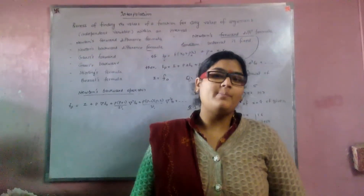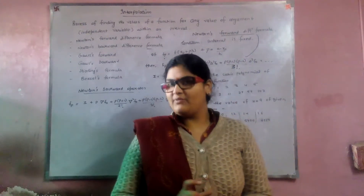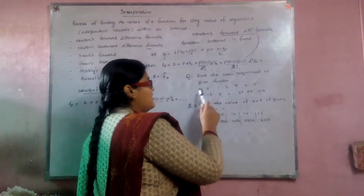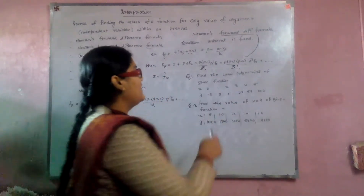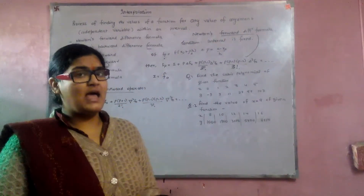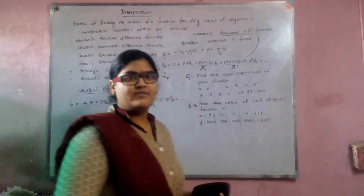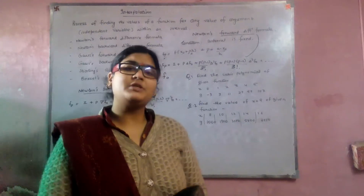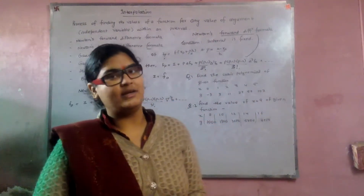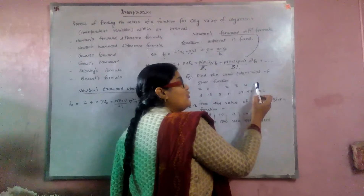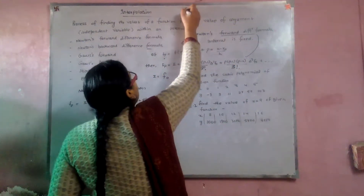Hello and welcome to my new video on the topic of interpolation. Suppose we have a function with arguments 0, 1, 2, 3, 4, 5 and corresponding values. If we have to find the value at 0.5, 1.5, or 4.5 — that is, between the given intervals — this process is called interpolation. If we have to find the value at 5.5, which is outside the range, that process is called extrapolation.